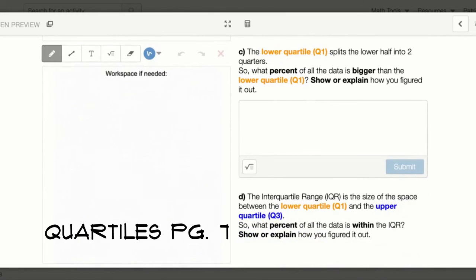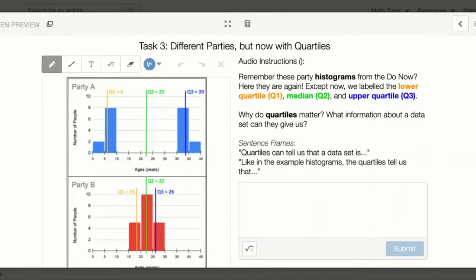Finally letter D: The interquartile range or IQR is the size of the space between the lower quartile Q1 and the upper quartile Q3. So what percent of all the data is within the IQR? Show or explain how you figured it out. That is page seven.